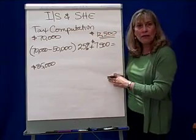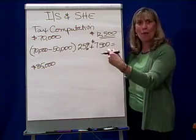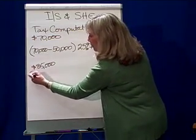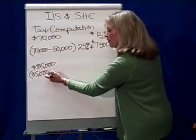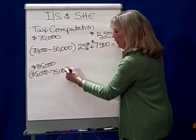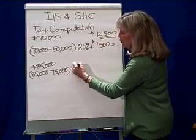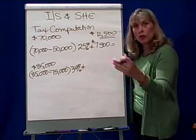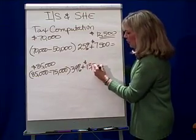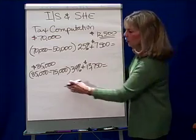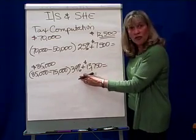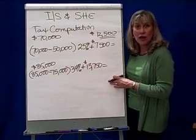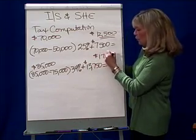Let's try $85,000. Now $85,000 is in the bracket above the 25% level. So we take $85,000 minus the bracket cutoff of $75,000. The next bracket up has a graduated tax rate of 34%, plus the taxes owed at the lower graduated brackets of $13,750. So we take $10,000 times 34% plus $13,750, giving a total tax of $17,150 on an $85,000 taxable income.